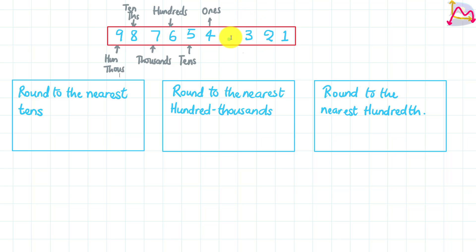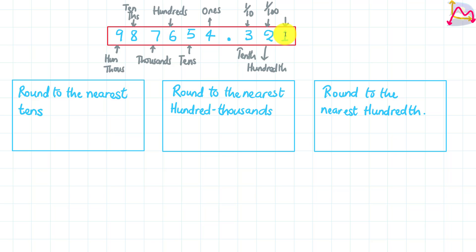On the other hand, after the decimal point to the right, we need to recognize that 3 is written in terms of its place value as one tenth — also known as the tenth. Next, 2 is recognized in terms of place value as one hundredth — also written as the hundredth. And 1 is recognized as its place value of one over one thousand — also written as the thousandth.